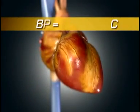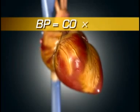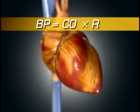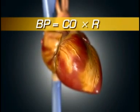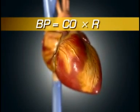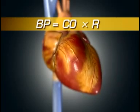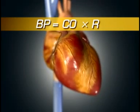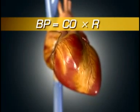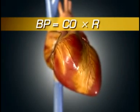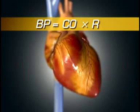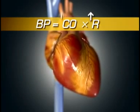Blood pressure is equal to the cardiac output — the volume of blood pumped out of the heart per minute — multiplied by the arteriolar resistance. Blood flow depends on the rate of heartbeats and the volume of blood pumped out with each beat.